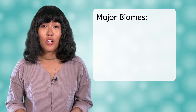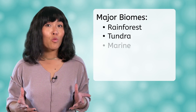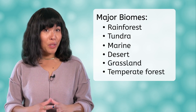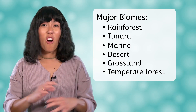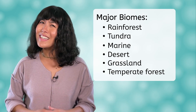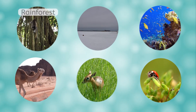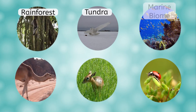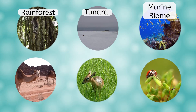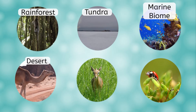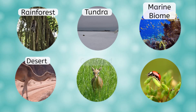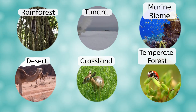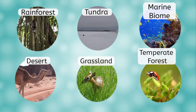We call these different environments biomes. Some of the major biomes on Earth include rainforest, tundra, marine, desert, grassland, and temperate forest. Do you happen to know which biome you live in? Let's look again: we have a monkey climbing in the rainforest, an owl catching a mouse in the tundra, tropical fish in a marine biome, a camel munching on the sparse plant life in the desert, an adorable baby gazelle in the grassland, and finally a shiny red ladybug in the temperate forest. We'll take a closer look at some of these biomes in an upcoming lesson.